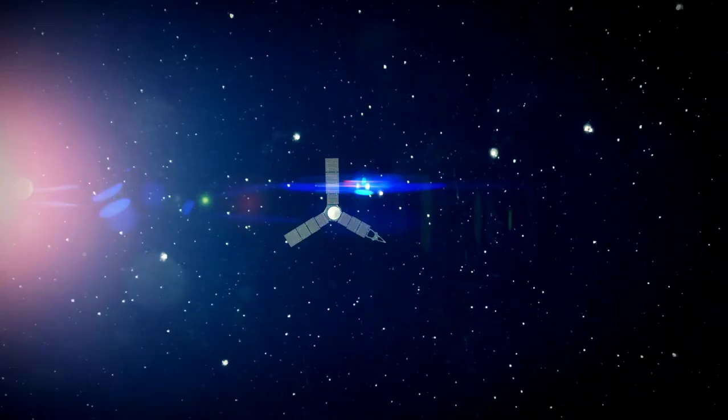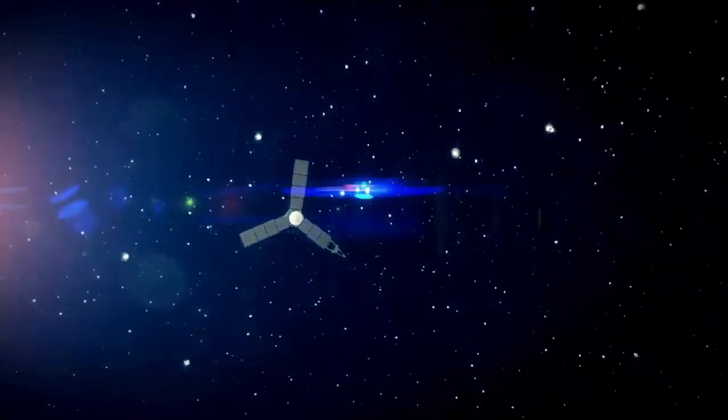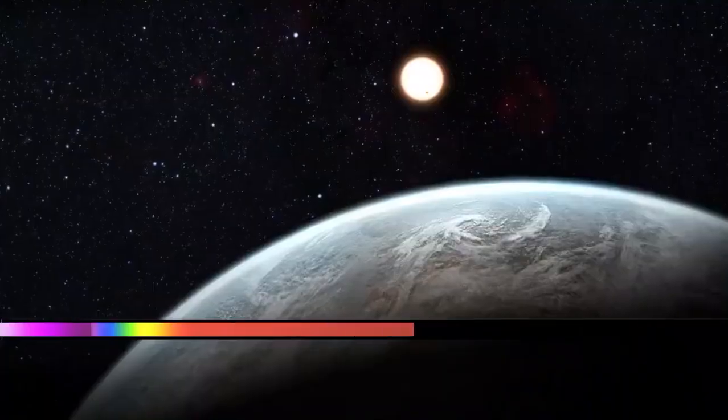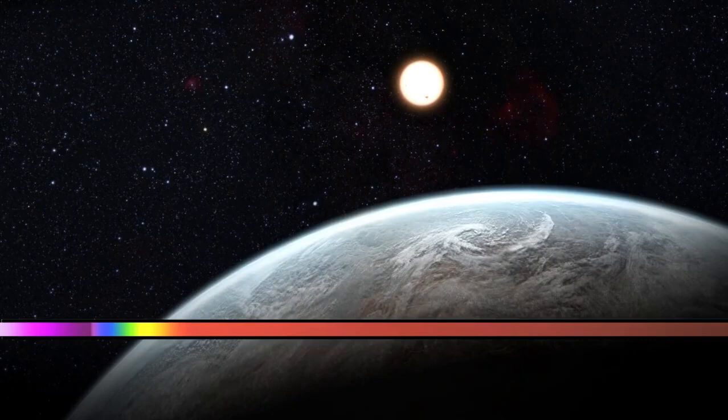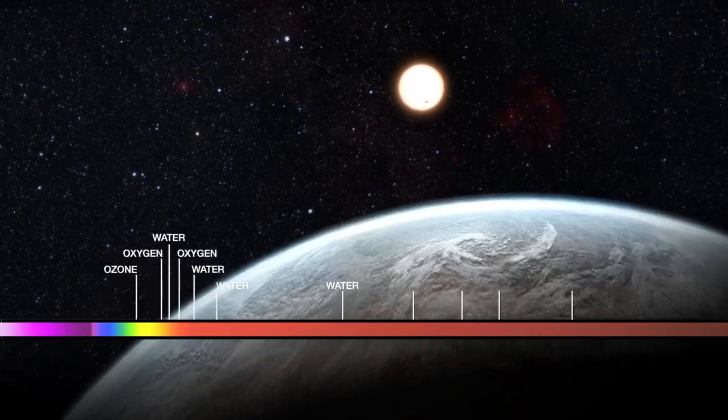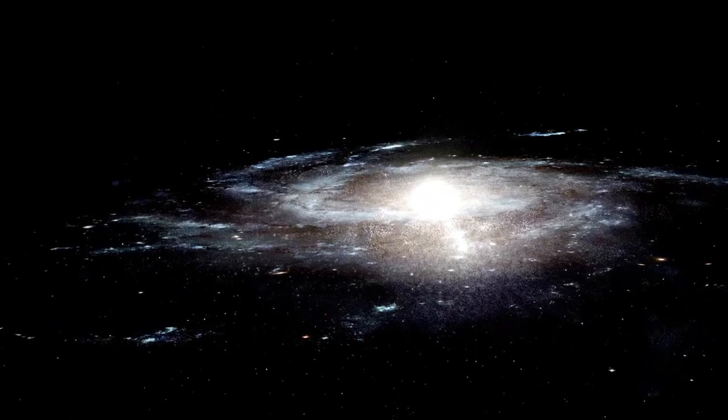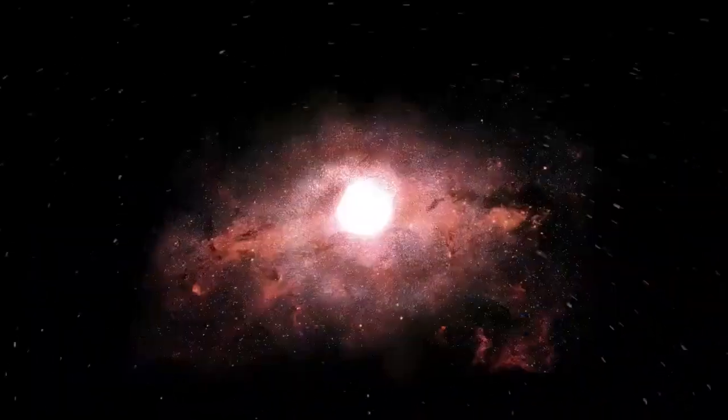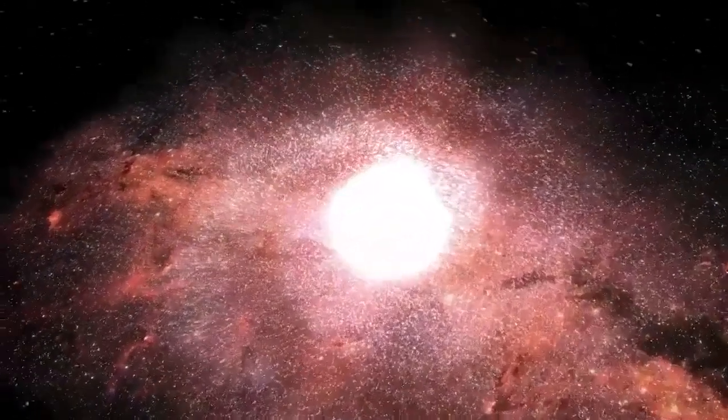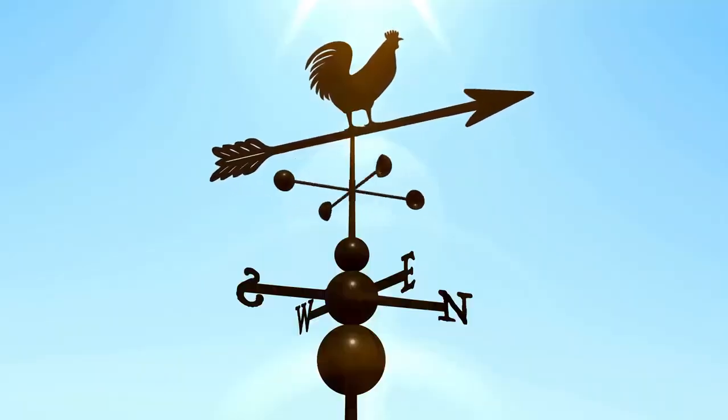To appreciate this vastness, consider traveling through space at the speed of light, which moves at about 299,792 kilometers per second or 186,282 miles per second. At this speed, light can cover the distance from Earth to the Sun, one astronomical unit, in just 8 minutes and 20 seconds.